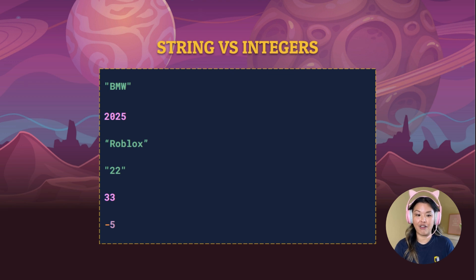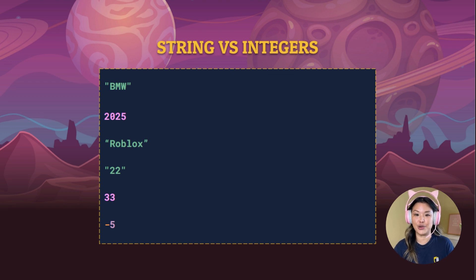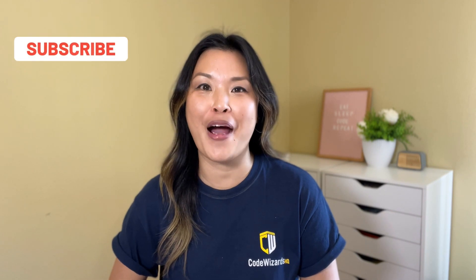Awesome job — I'm sure you guys got all of those correct. So we've got our string, our integer, a string, a string, an integer, and an integer. Now you know all about string and integer data types. Next time, I'll show you how to use variables to store our data. Don't forget to subscribe for the rest of our Python mini course. Kids can also learn Python with live instructors at Code Wizards HQ. See you next time.